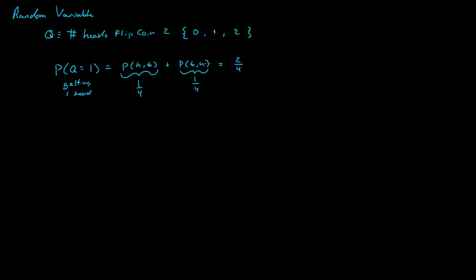What's the probability of Q being two — getting heads both times? That can only happen one way. The probability is 0.5 times 0.5, which equals one fourth.